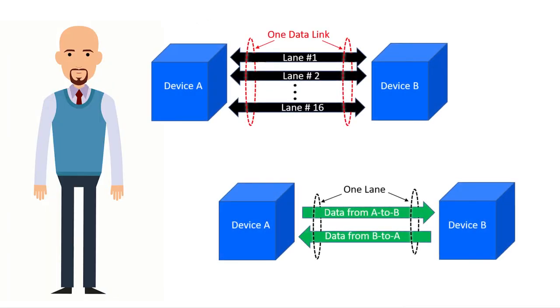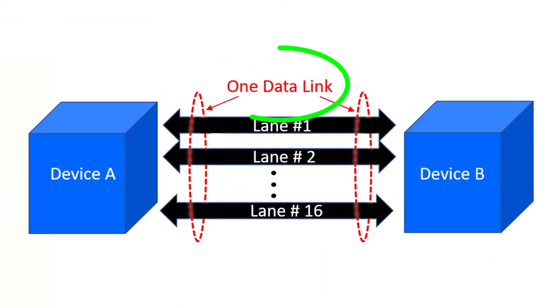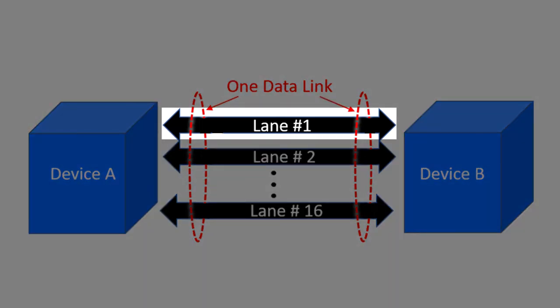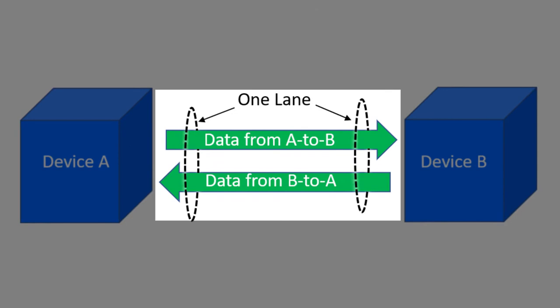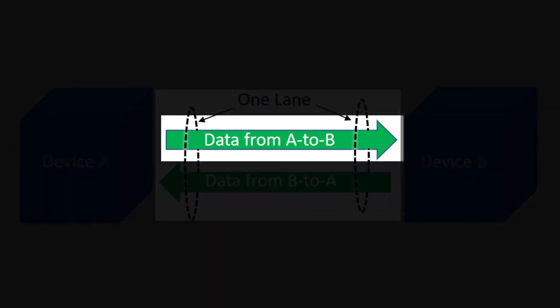You may recall from the previous video in this series that a data link is actually the combination of one or more lanes, and that each of these lanes, in turn, consists of two one-way data paths between Device A and Device B. We are going to focus on one of these paths.